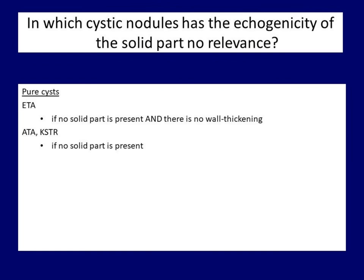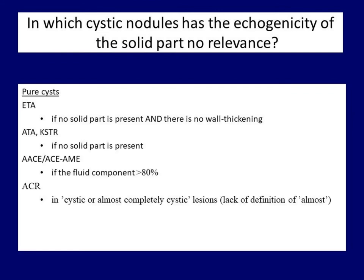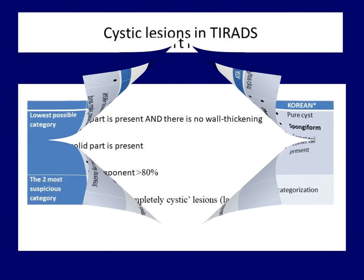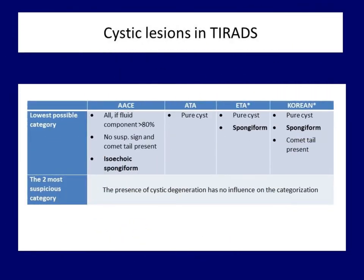The definition of the European Thyroid Association is the strictest, including not only the lack of solid part but even the lack of any wall thickening. The American Thyroid Association and Korean Thyroid Society are satisfied with the lack of solid part. The AACE guideline is the most permissive, which seems too permissive. The ACR definition is the only inaccurate one. Spongiform cysts are included in all classifications except the ATA.